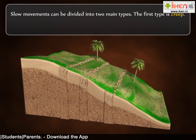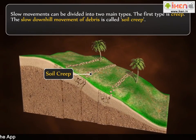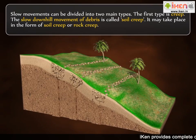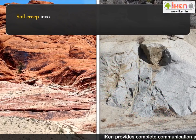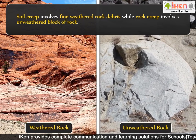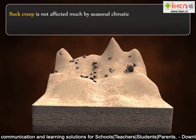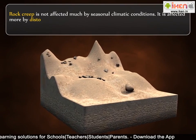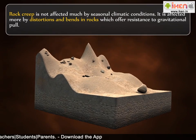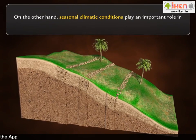The first type is creep. The slow downhill movement of debris is called soil creep. It may take place in the form of soil creep or rock creep. Soil creep involves fine weathered rock debris, while rock creep involves unweathered blocks of rock. Rock creep is not affected much by seasonal climatic conditions; it is affected more by distortions and bends in rocks which offer resistance to gravitational pull. On the other hand, seasonal climatic conditions play an important role in soil creep.